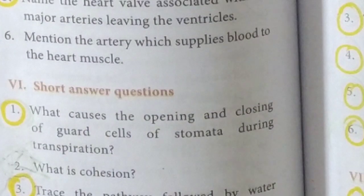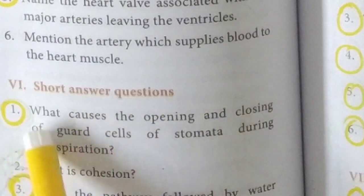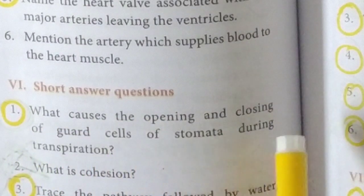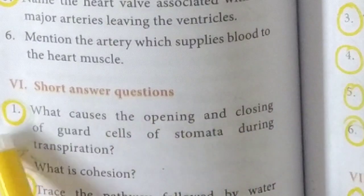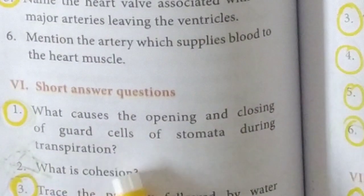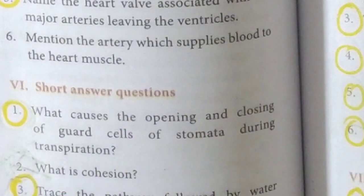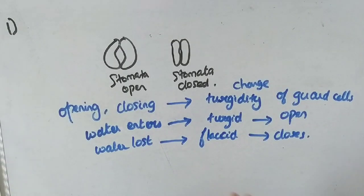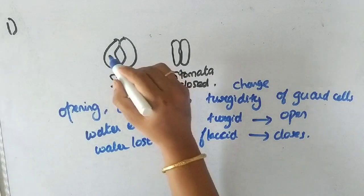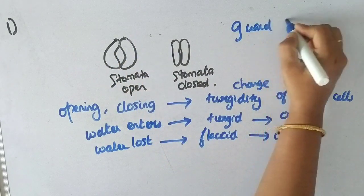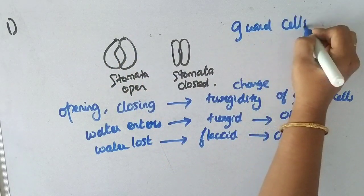What causes the opening and closing of guard cells of a stomata during transpiration? How does the stomata open and close? The opening and closing of the stomata depends on the turgidity of the guard cells.